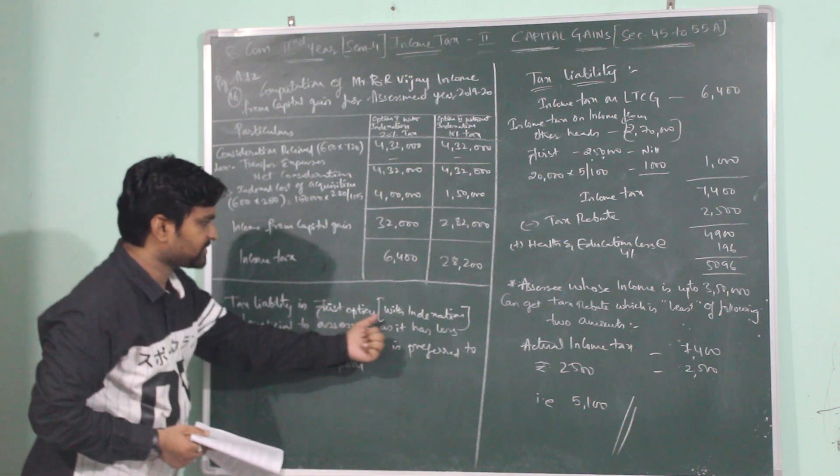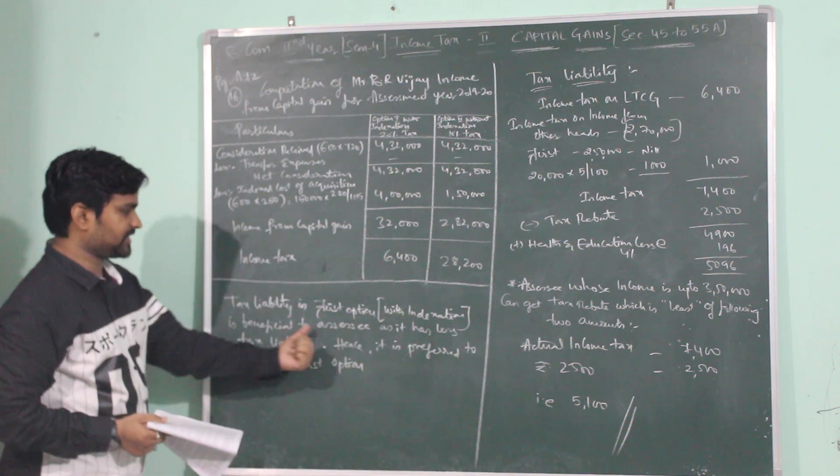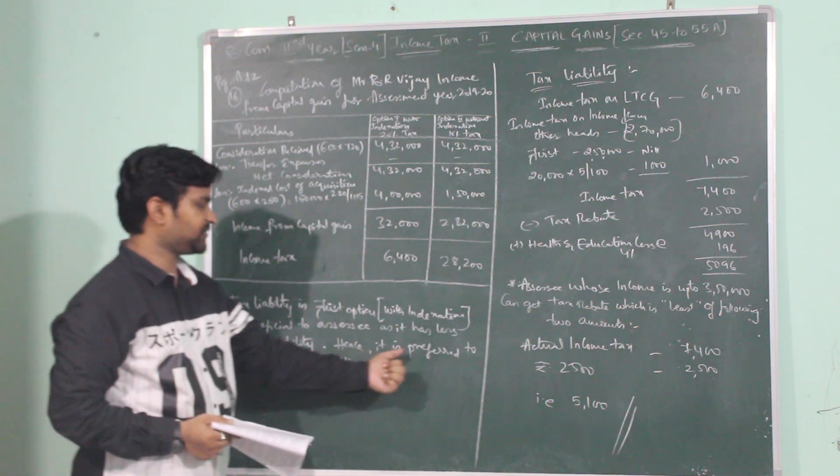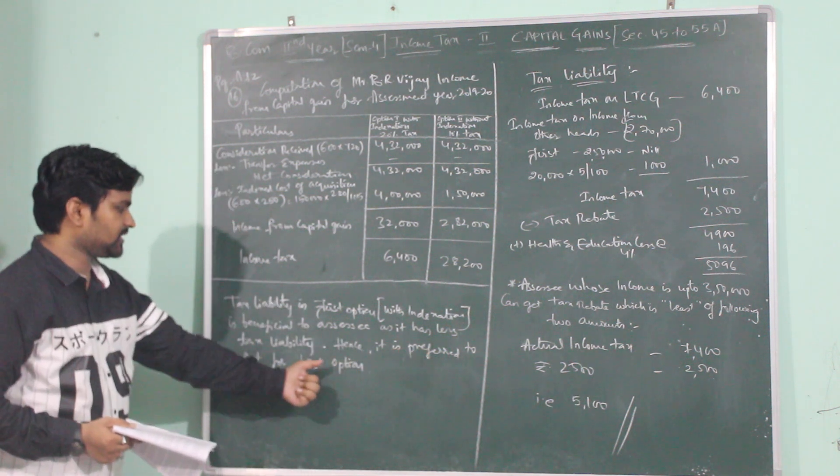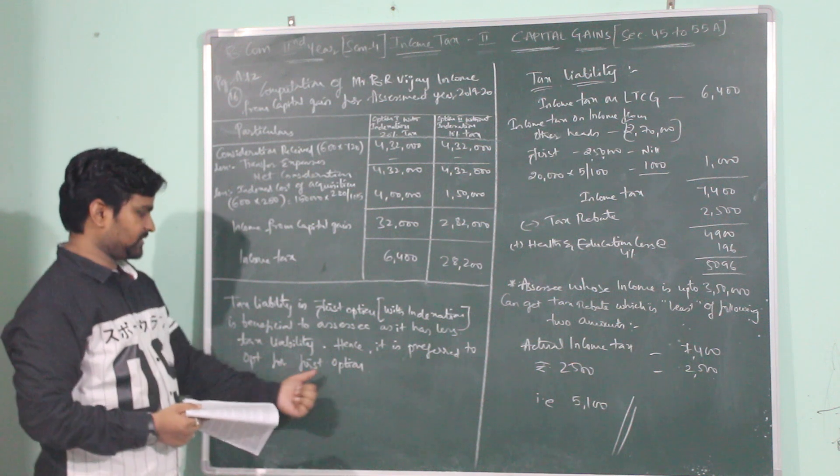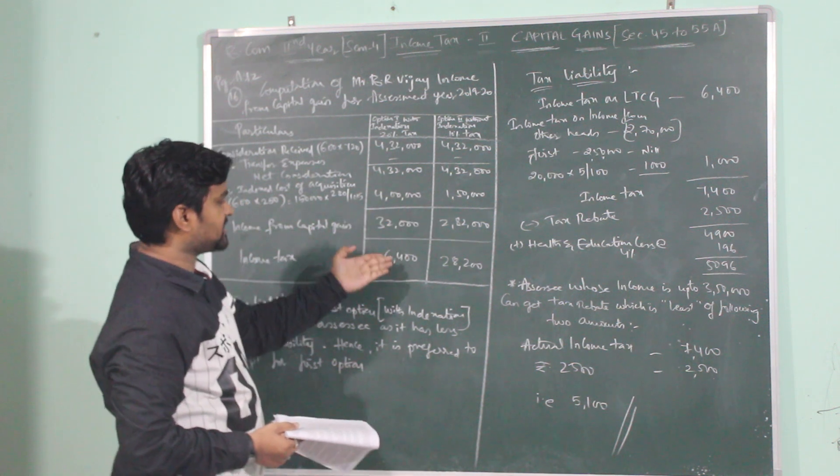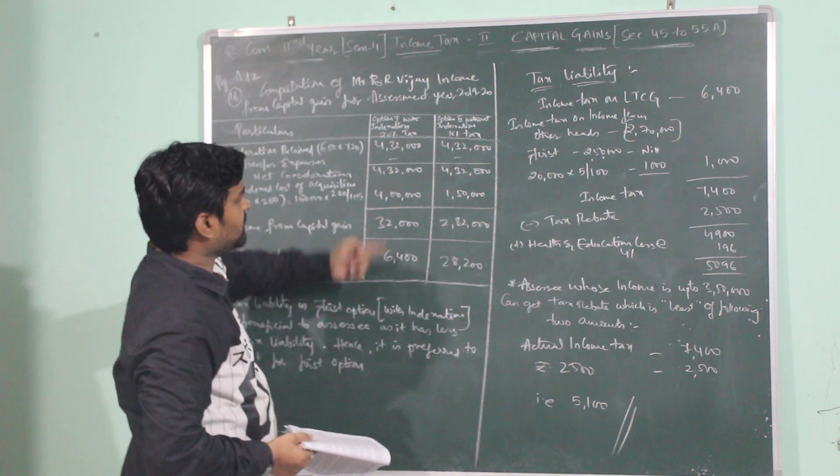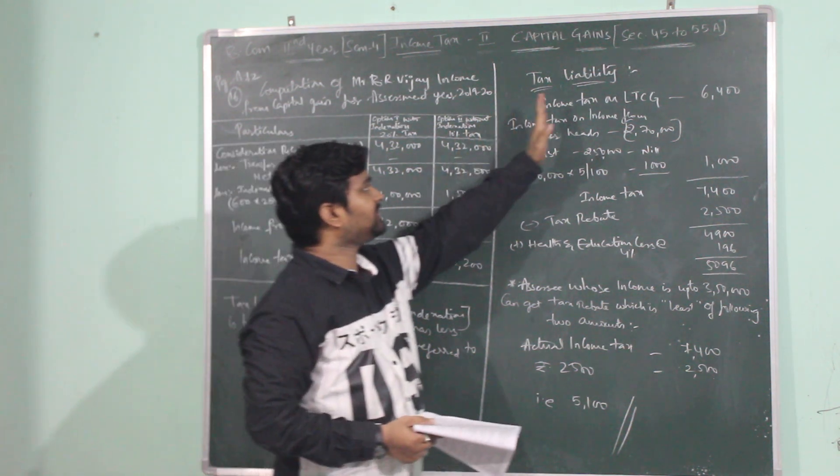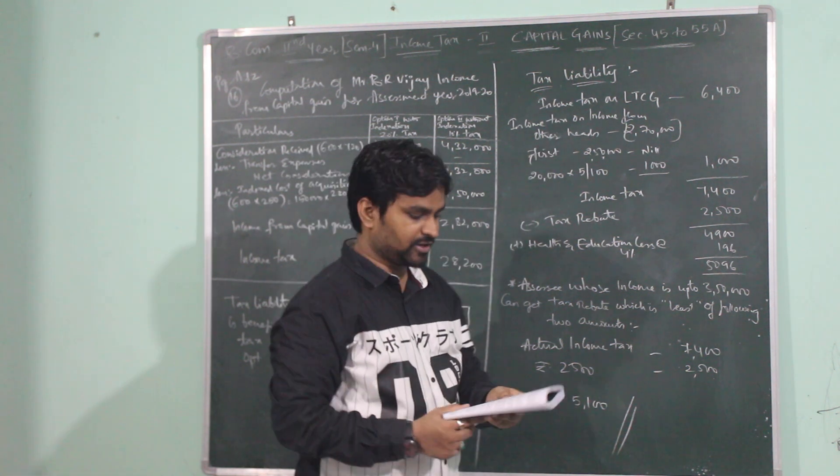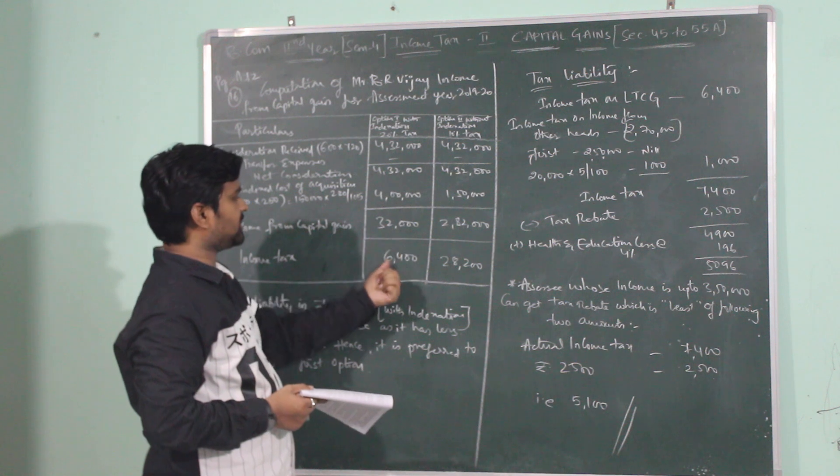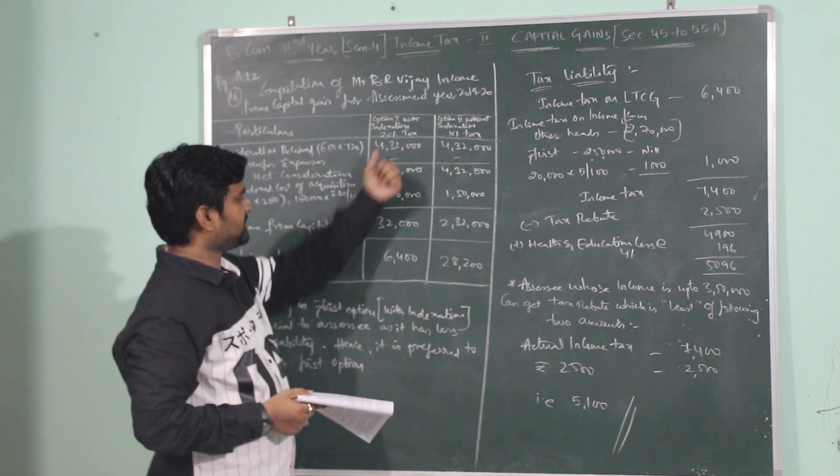Tax liability in first option with indexation is beneficial to assessor as it has less tax liability. Hence it is preferred to opt for option 1. Now we are computing his tax liability. As it is long-term capital gain, income tax on long-term capital gain is 6,400 at 20%.